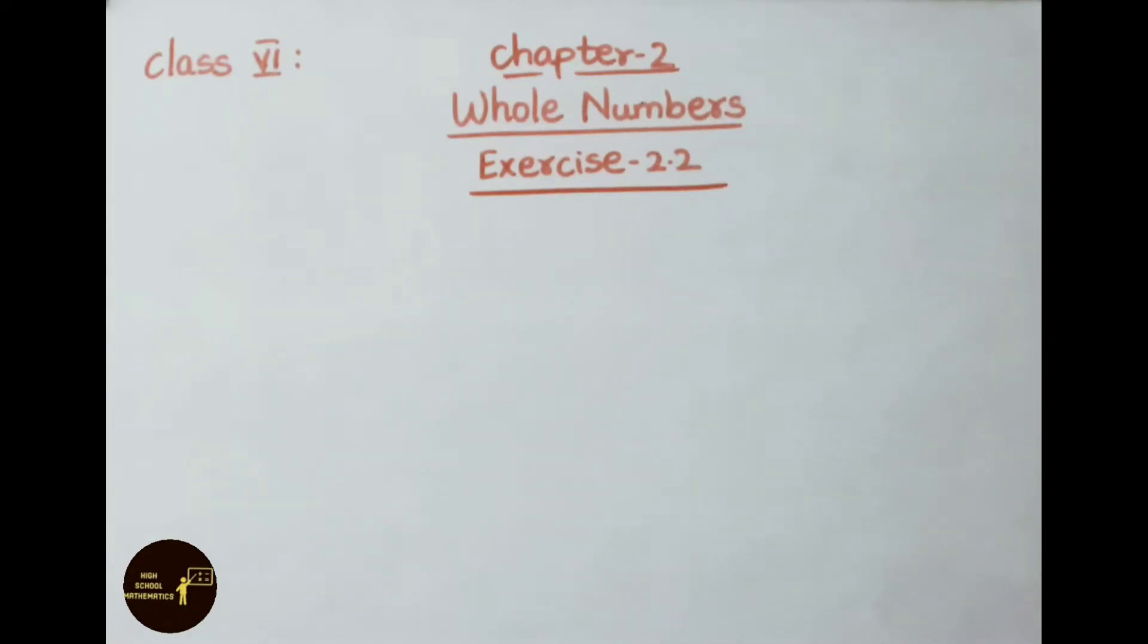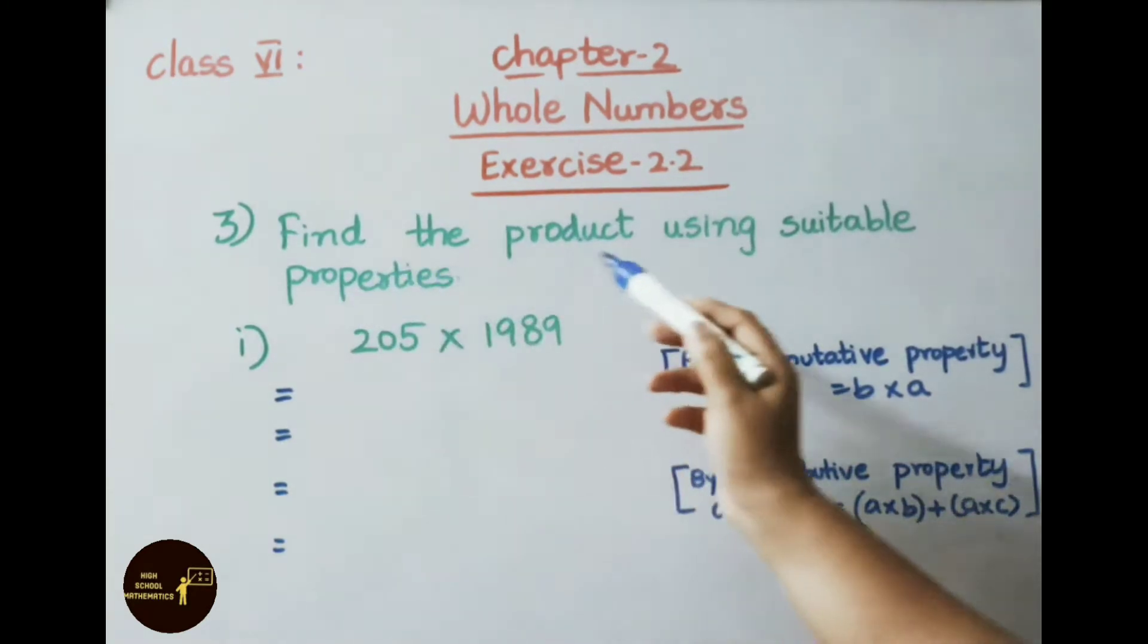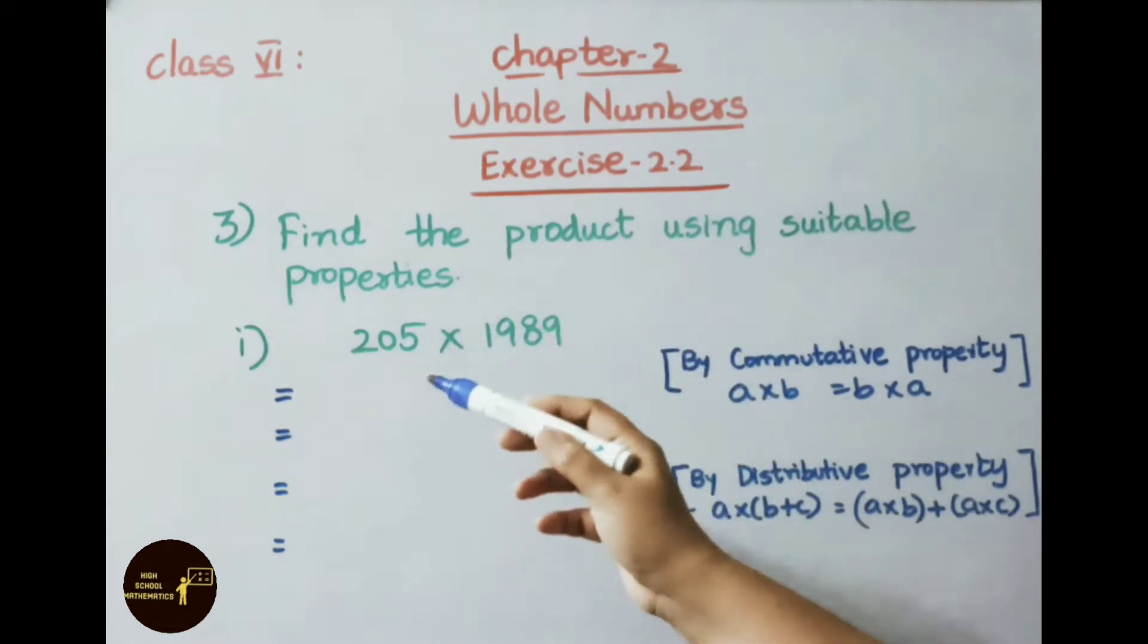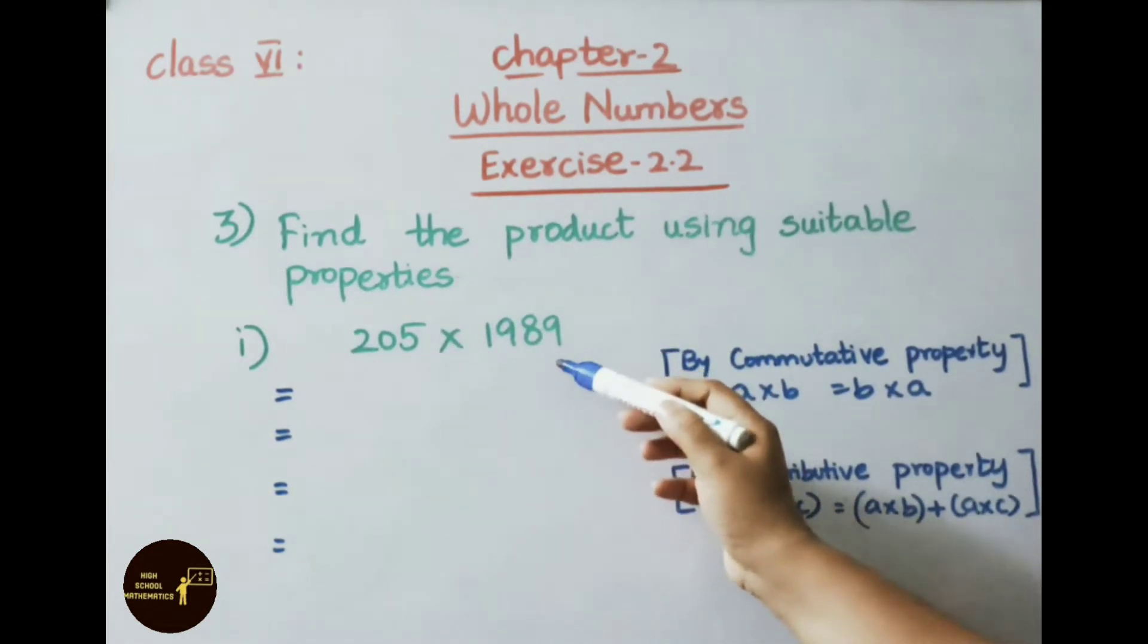Hello everyone, welcome to high school mathematics channel. Today we are going to learn Class 6, Chapter 2 Whole Numbers, Exercise 2.2. Third sum: find the product using suitable properties. First one, 205 multiplied by 1989.